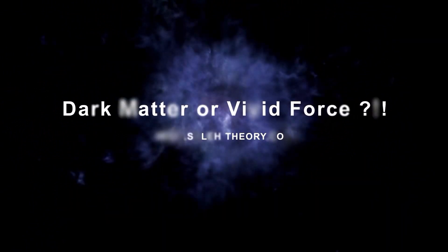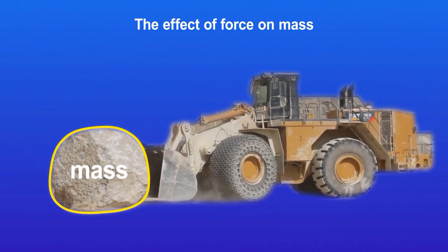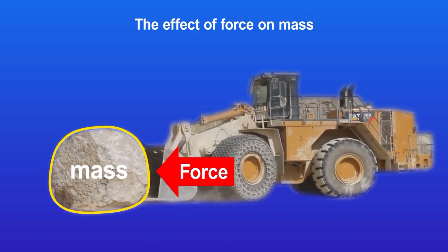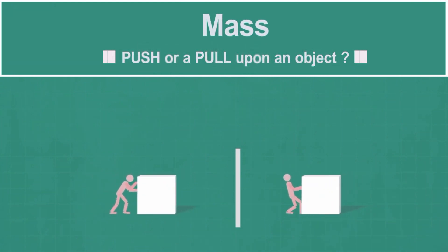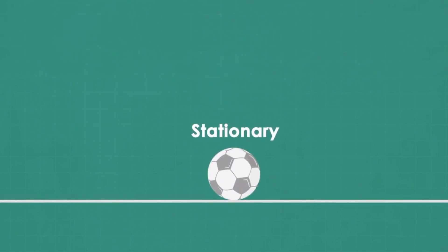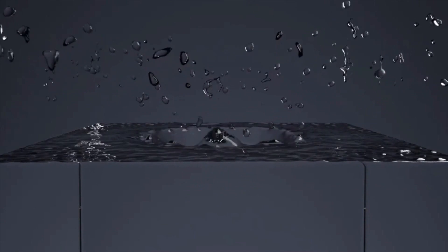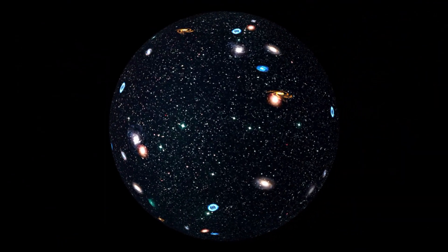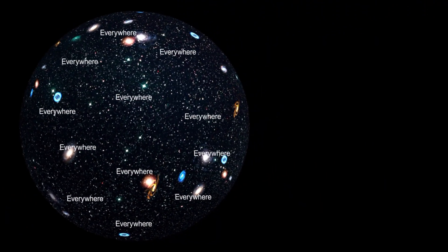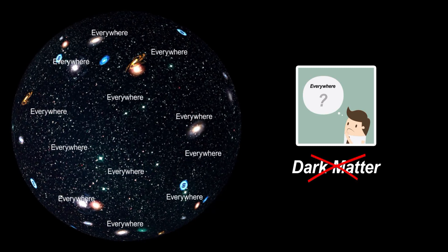Dark matter, or vivid force. Mass, by definition, is a measure of the resistance of an object to acceleration when a force is applied. In principle, mass occupies space and it is there where the force takes effect. Even given what has been said, dark matter does not meet the definition of mass because it is everywhere but we cannot find it. Indeed, what is called dark matter is an illusionary definition that must be corrected.